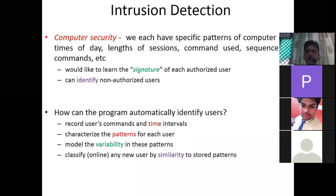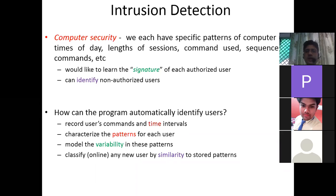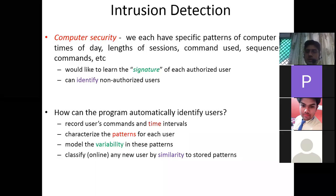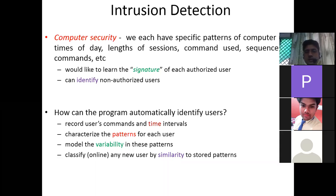The system learns the signature of each authorized user and can identify non-authorized users. It records users' commands and time intervals, characterizes the patterns for each user, models the variability, and classifies any new user by similarity to stored patterns.